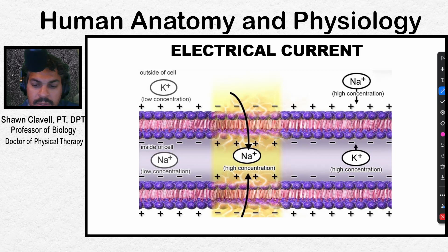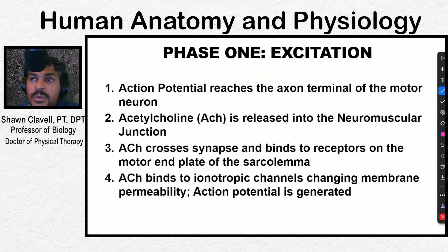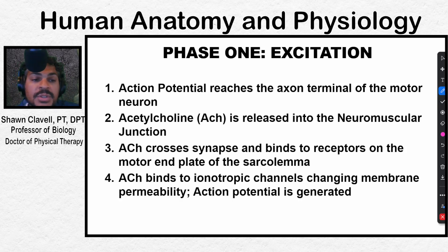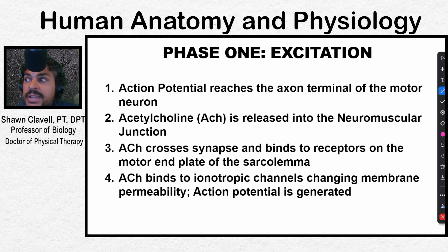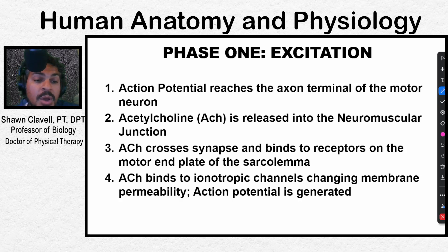Let's look at this in word form before we watch the video. In phase one — excitation, or the events at the neuromuscular junction — an action potential travels to the motor neuron. That neuron releases acetylcholine into the neuromuscular junction. Acetylcholine crosses the synapse, binds to receptors on the motor end plate of the sarcolemma, and binds to ionotropic channels. Those receptors are ionotropic channels that change the membrane permeability, and an action potential is ultimately generated.